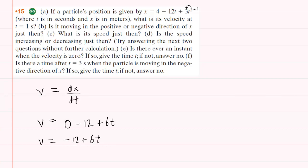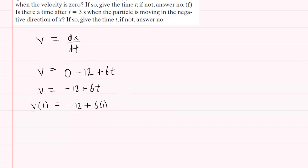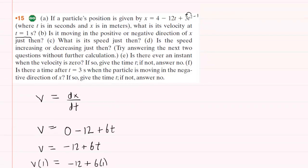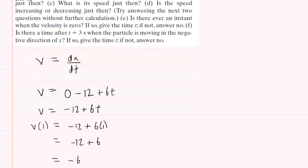Now that we have the velocity function, we can determine the velocity at t equals 1 second. We will compute v of 1 — basically, that means plugging 1 in for t. What you get is negative 12 plus 6, which equals negative 6. The units of the velocity will be in meters per second because the question noted that the position is in meters and the time is in seconds. So the correct answer to part A is negative 6 meters per second.